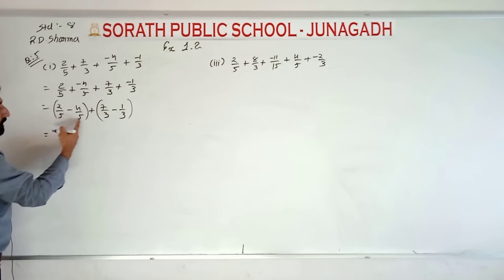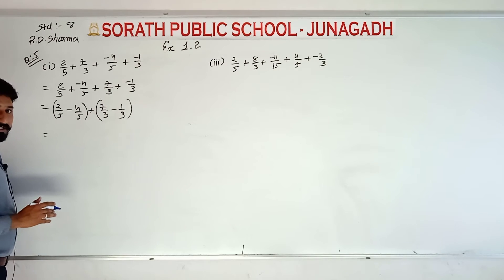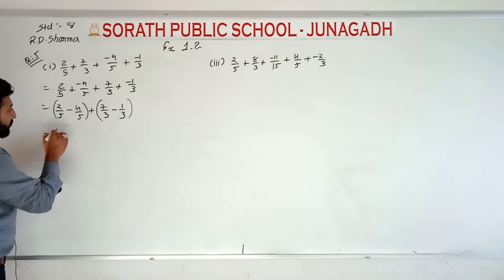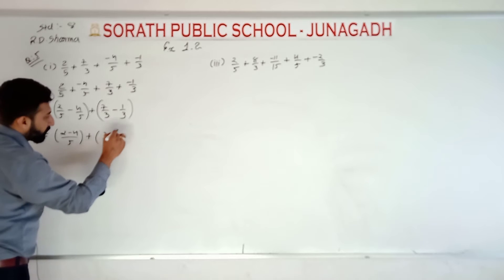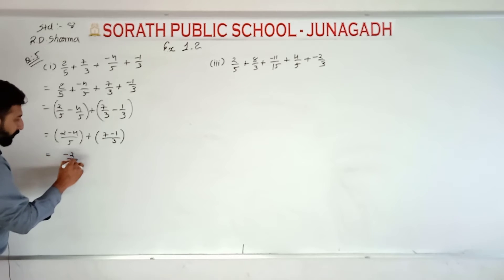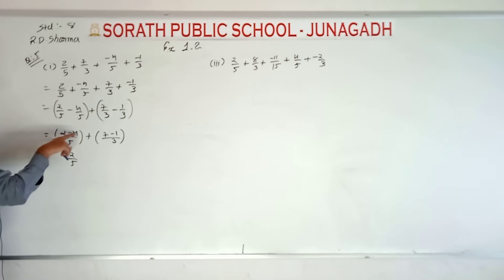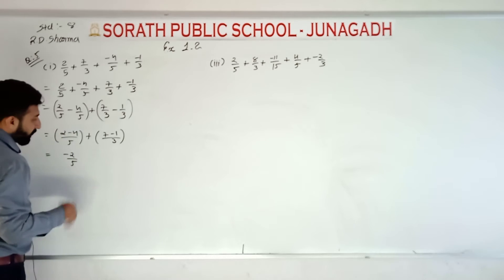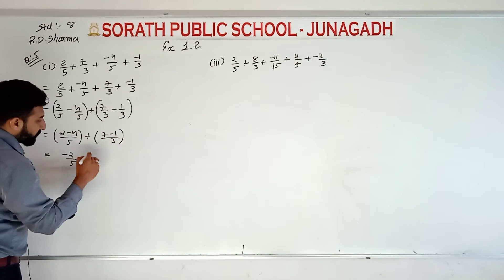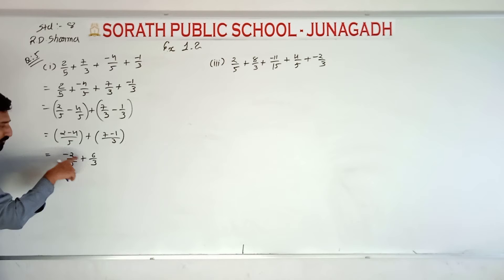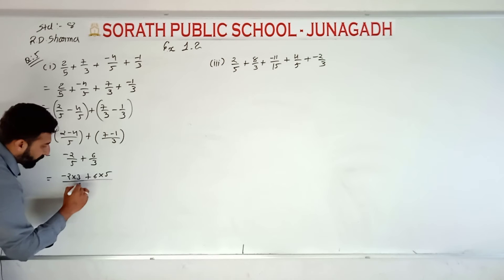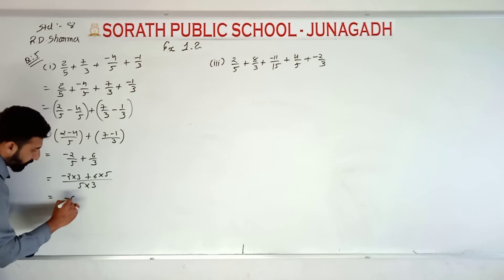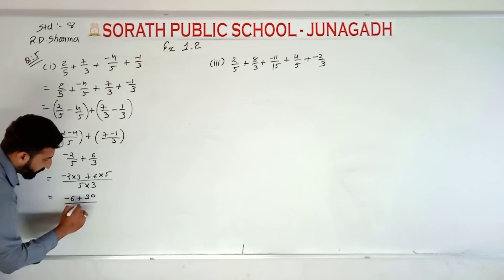Both denominators in each pair are the same, so we can directly add or subtract. Plus 2 minus 4 upon 5, plus 7 minus 1 upon 3. That gives minus 2 upon 5 — opposite sign subtraction: 4 minus 2 is 2, sign from bigger value, so minus 2 upon 5. Plus 7 minus 1 is 6 upon 3. Again cross multiplication: minus 2 multiplied by 3, plus 6 multiplied by 5, denominator 5 multiplied by 3. Minus 6 plus 30 upon 15.